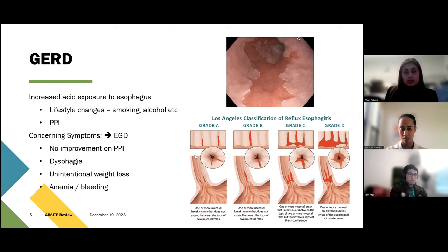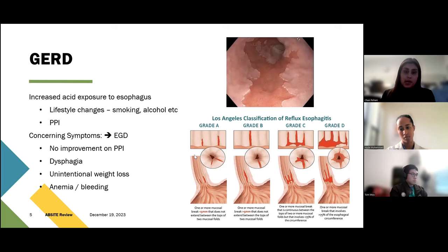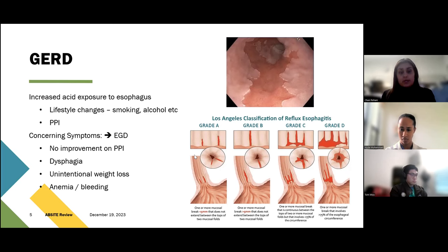On EGD, you might see Barrett's esophagus — a stark difference between squamous and columnar epithelium. The definition of Barrett's is metaplasia and changes on biopsy from the normal esophageal mucosa. The Los Angeles classification of reflux esophagitis helps define the degree of esophagitis: Grade A is one or more mucosal breaks less than five millimeters that don't extend between the tops of the mucosal folds, increasing in severity up to Grade D where it's more than 75% of the circumference. This classification helps determine how aggressive to be with treatment.